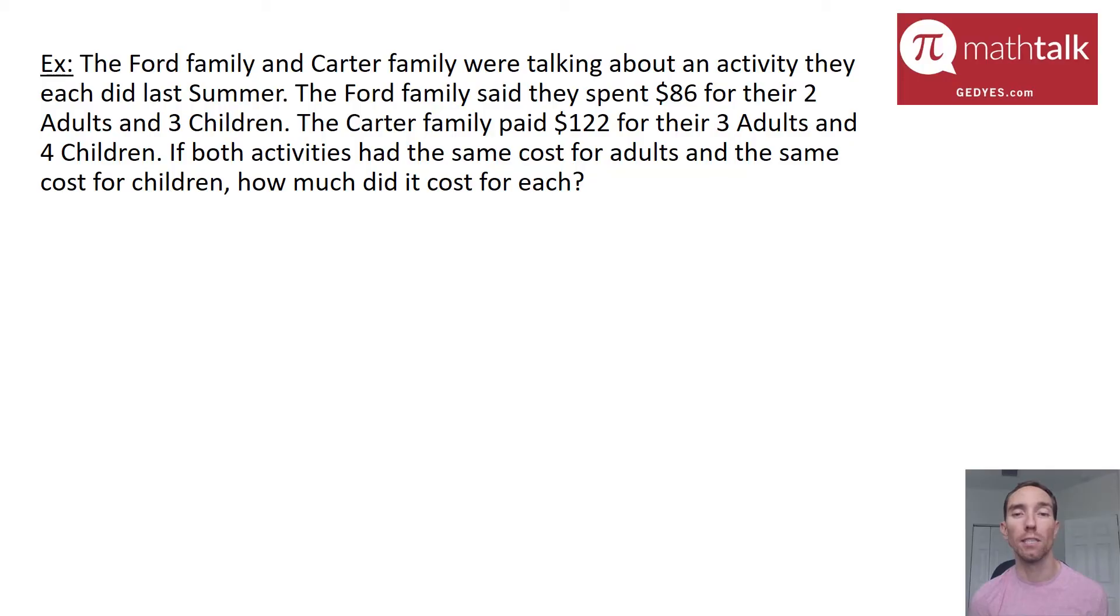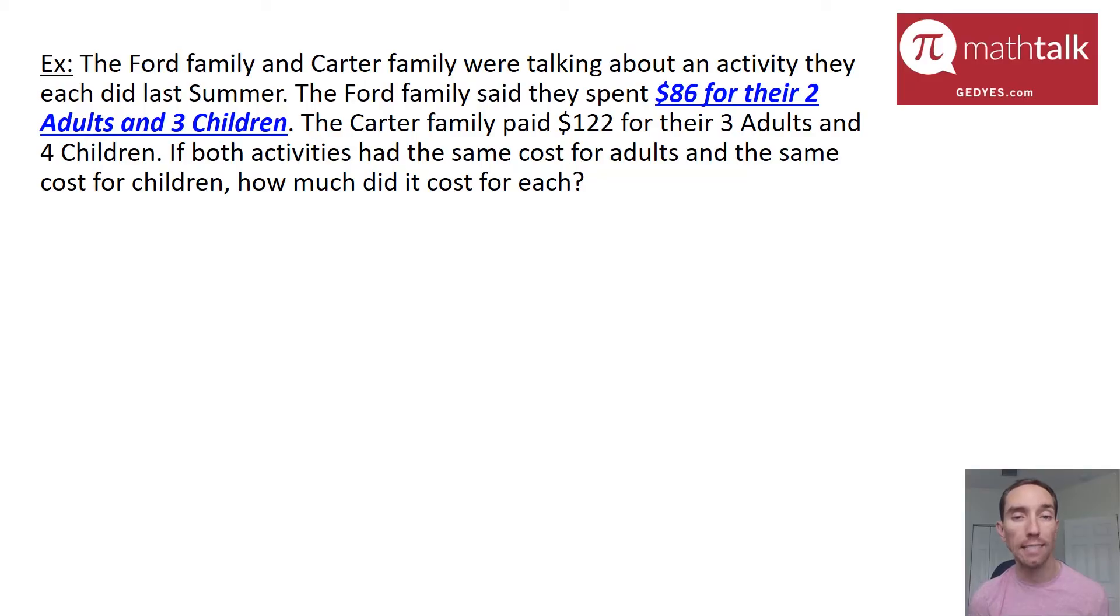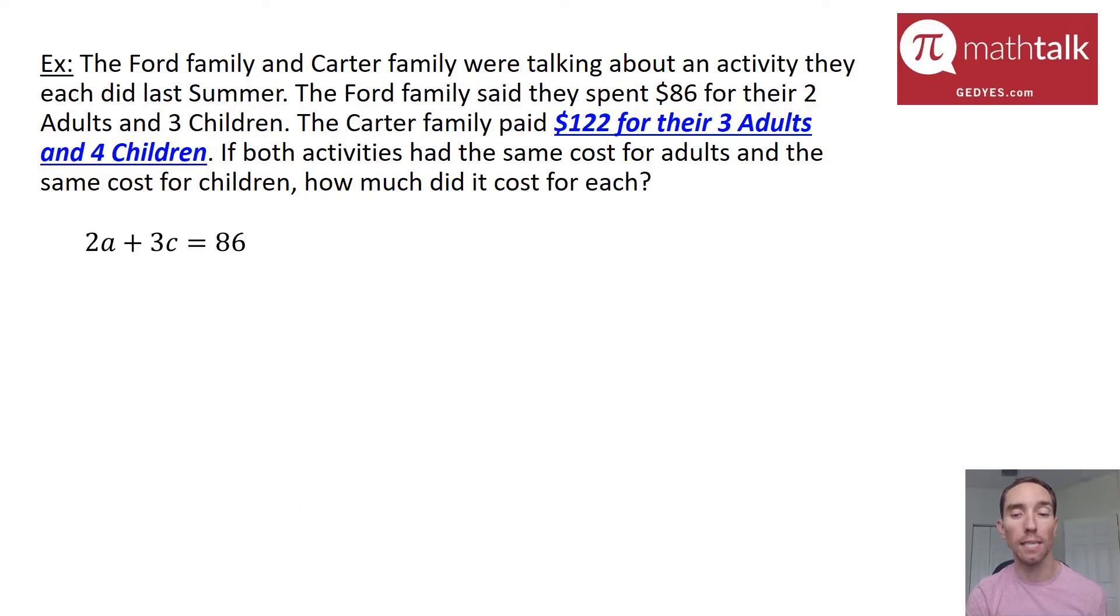So there's a lot of information in this word problem, but I really want to focus on what is important. You want to look for things that include numbers, costs, things like that. In this example, we have $86 for two adults and three children. So I'm going to use letters to represent adults and children, A and C. And I know that two adults plus three children equals $86. I know the other piece of information is $122 for three adults and four children. So I can write that 3A plus 4C equals 122.